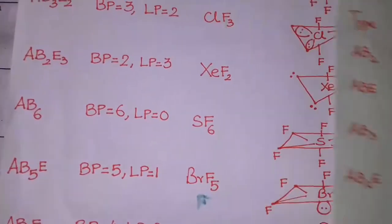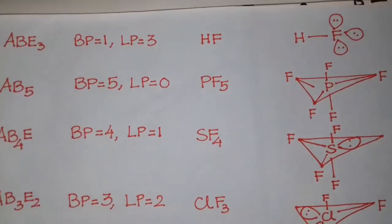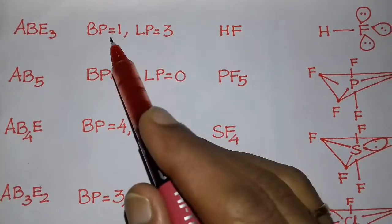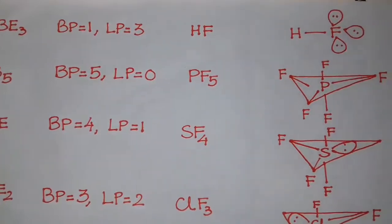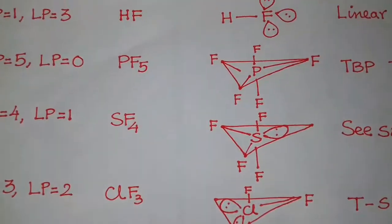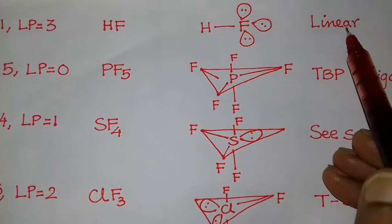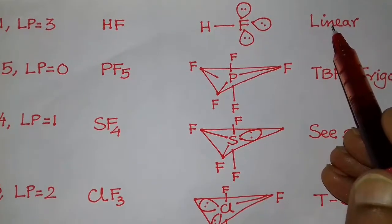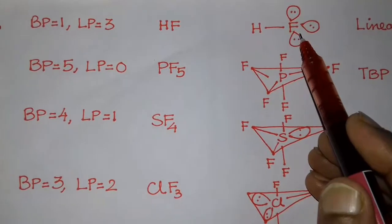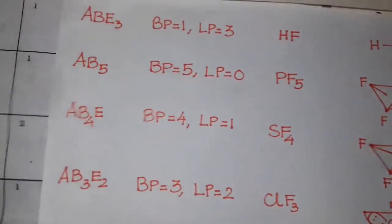Next, again H equals 4, in which lone pairs are 3 and bond pair is 1 — HF. Fluorine has 3 lone pairs on it. The shape goes from tetrahedral to linear, with maximum distortion occurring for the maximum number of lone pairs.